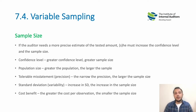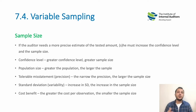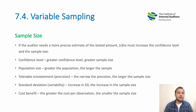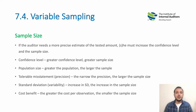Regarding tolerable misstatements: if you are less tolerant of misstatements, you have to increase the sample size. If you are more tolerant, or more confident that the data will be a good representation of the population, then you can reduce your sample size.